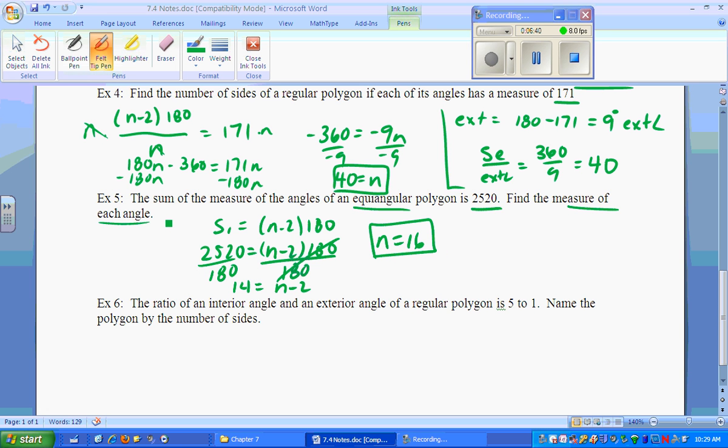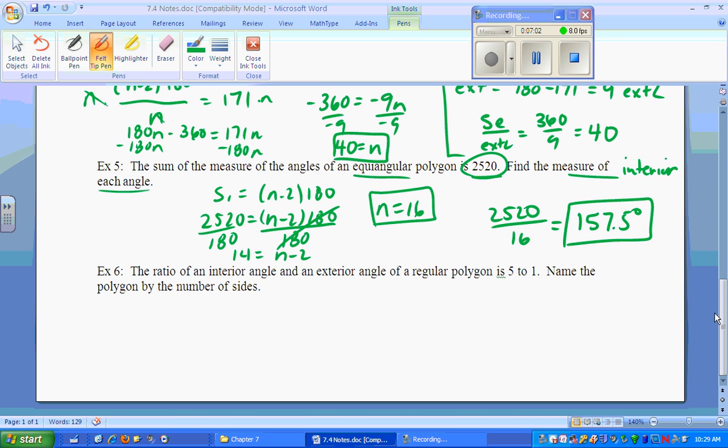We want to find the measure of each angle. That's talking interior again, because it doesn't say exterior. What was the total? 2520 on 16 sides, giving us 157.5 degrees apiece. And can you have 0.5 for an angle measure? Yes. We said no for a number of sides, yes for an angle measure.